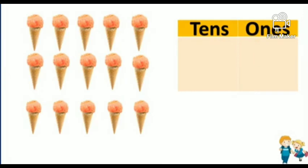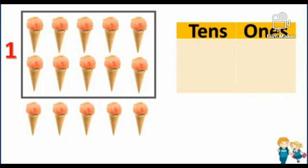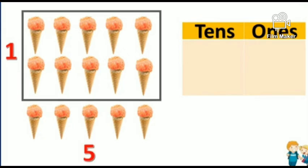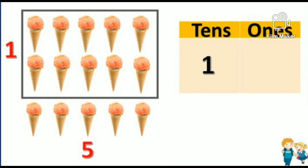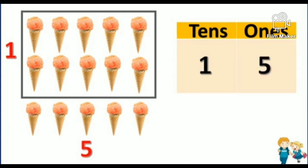Look at the next example. We have some set of ice creams given here. Come, let's group them into tens. Start counting: one, two, three, four, five, six, seven, eight, nine, ten — so we have one ten's. Count the remaining ice creams: one, two, three, four, five. So, how many ones do we have? Five. One ten's, five ones. The number is one-five: fifteen.